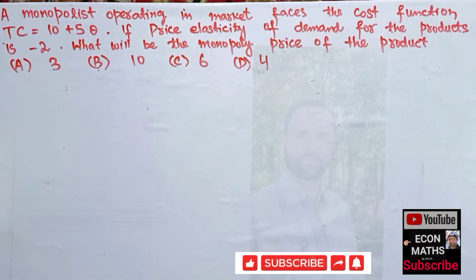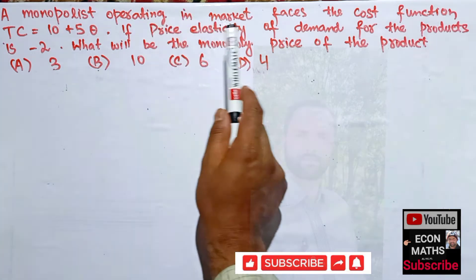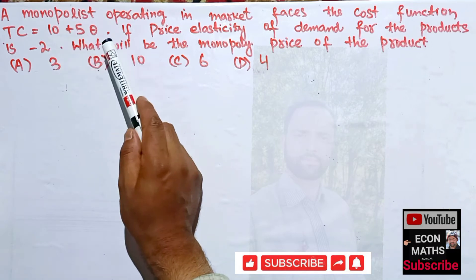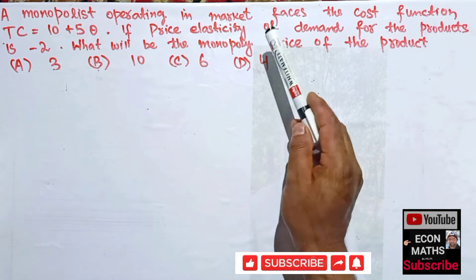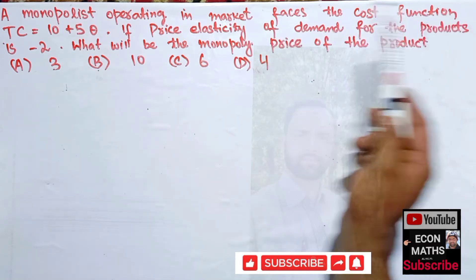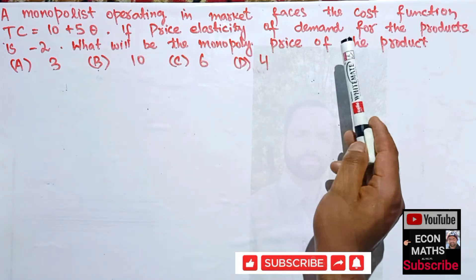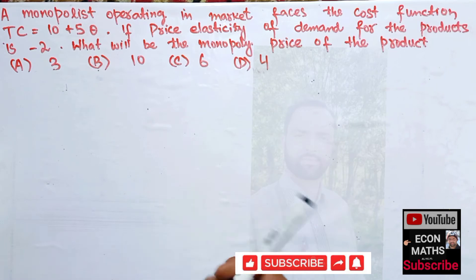In this video we will try to solve a numerical on finding the degree of monopoly and the monopoly price. The question is: a monopolist operating in a market faces the cost function TC = 10 + 5Q, where TC is total cost and Q is quantity. If the price elasticity of demand is given as negative 2, what will be the monopoly price? The options are 3, 10, 6, and 4.